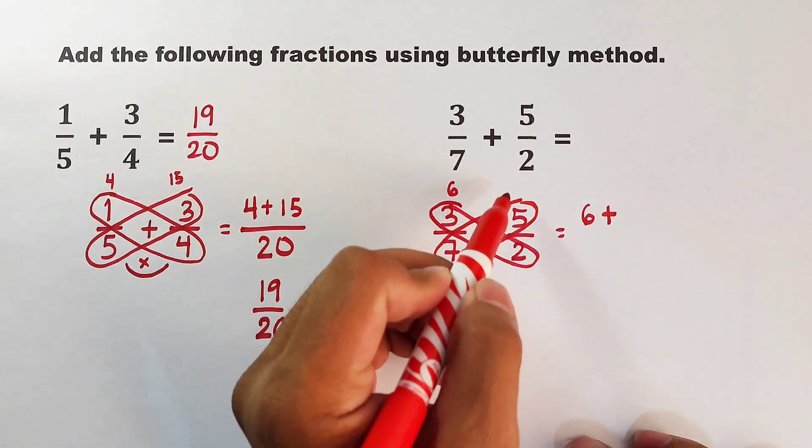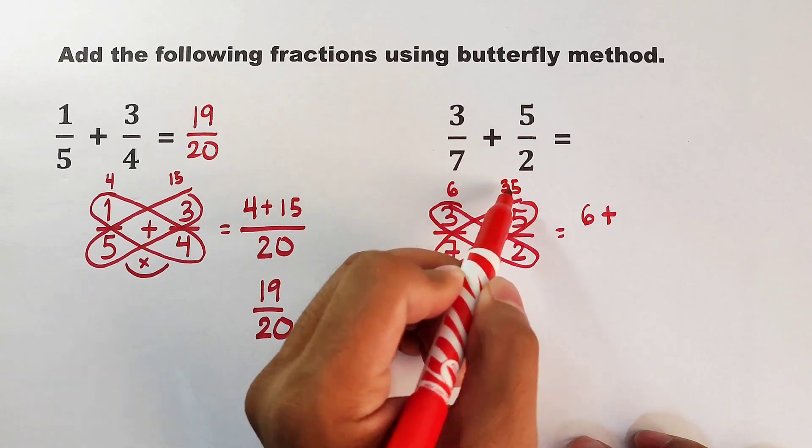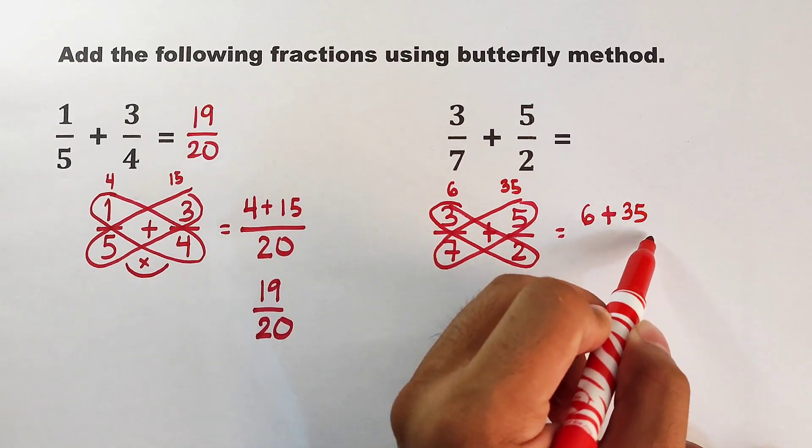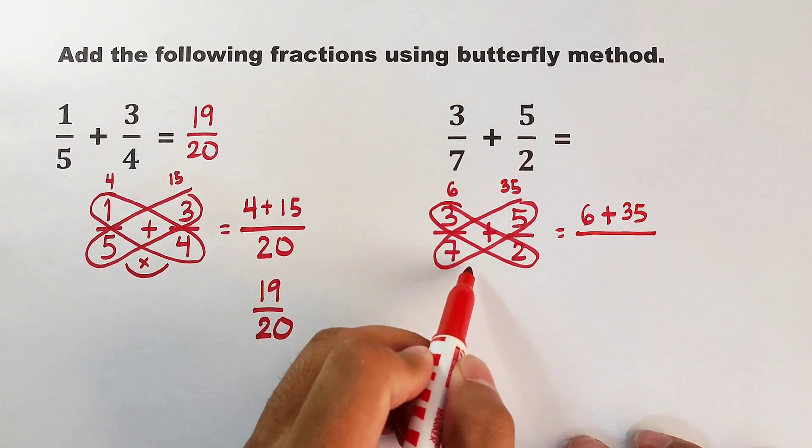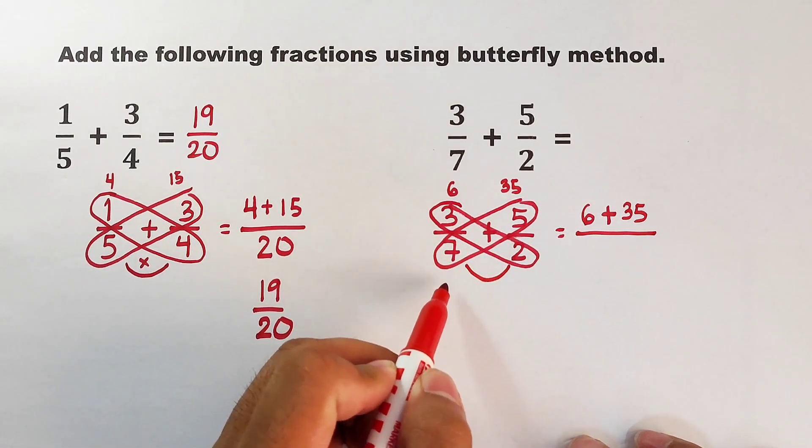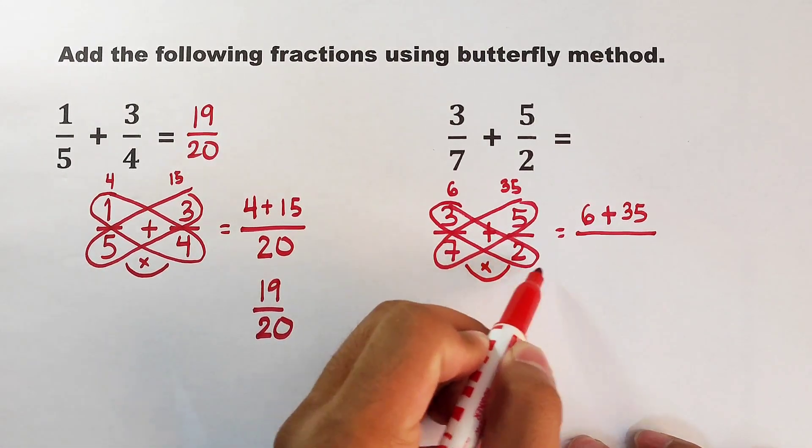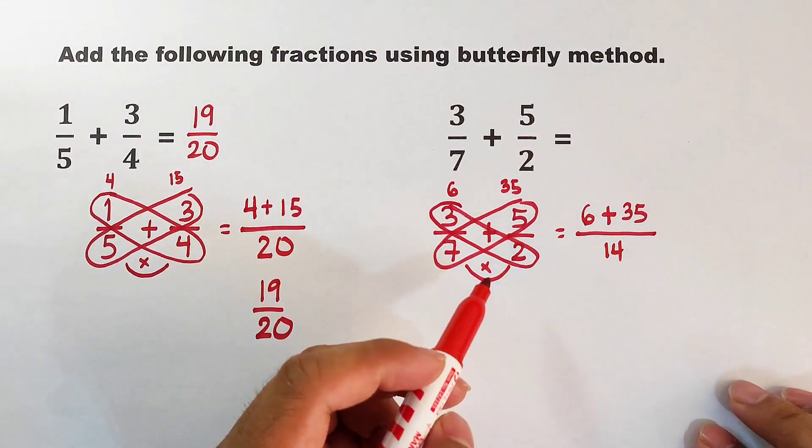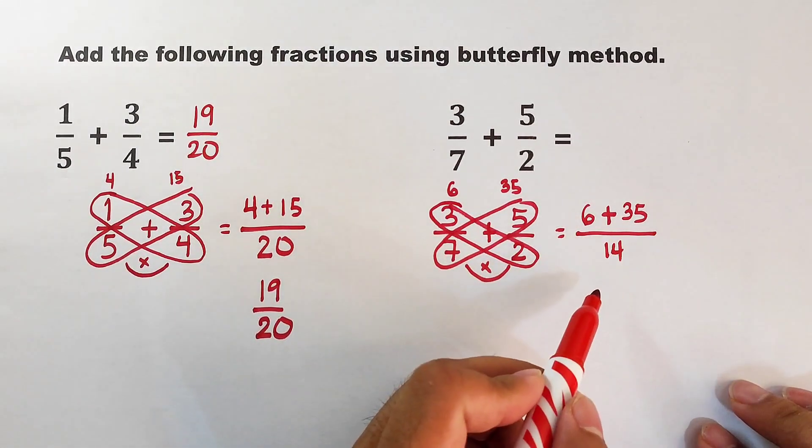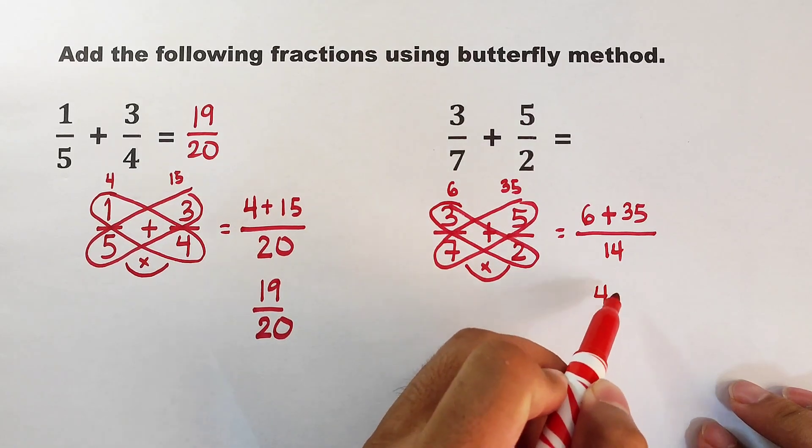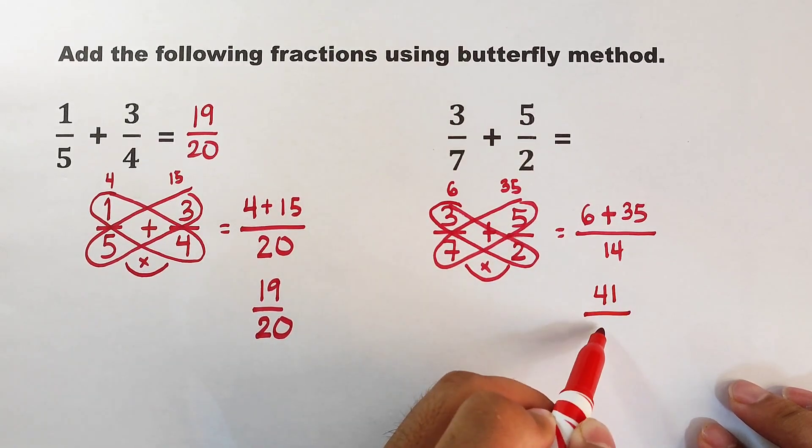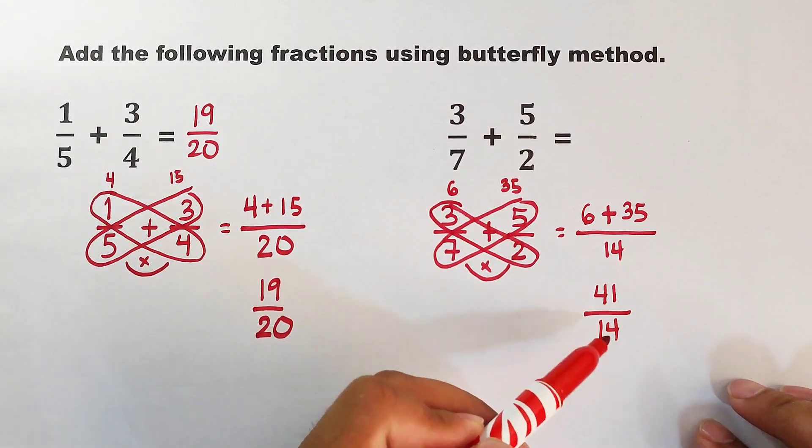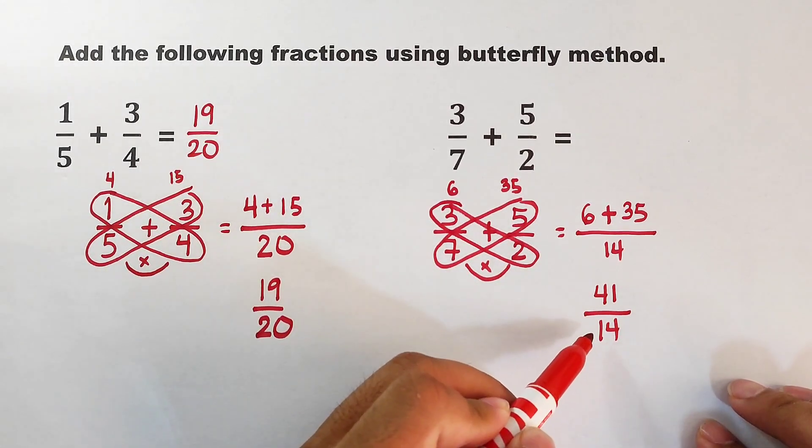7 times 5, that would be 35. So this is plus 35 over—multiply the denominators: 7 times 2 which is equal to 14. Add these numbers: we have 6 plus 35, that would be 41 over 14.